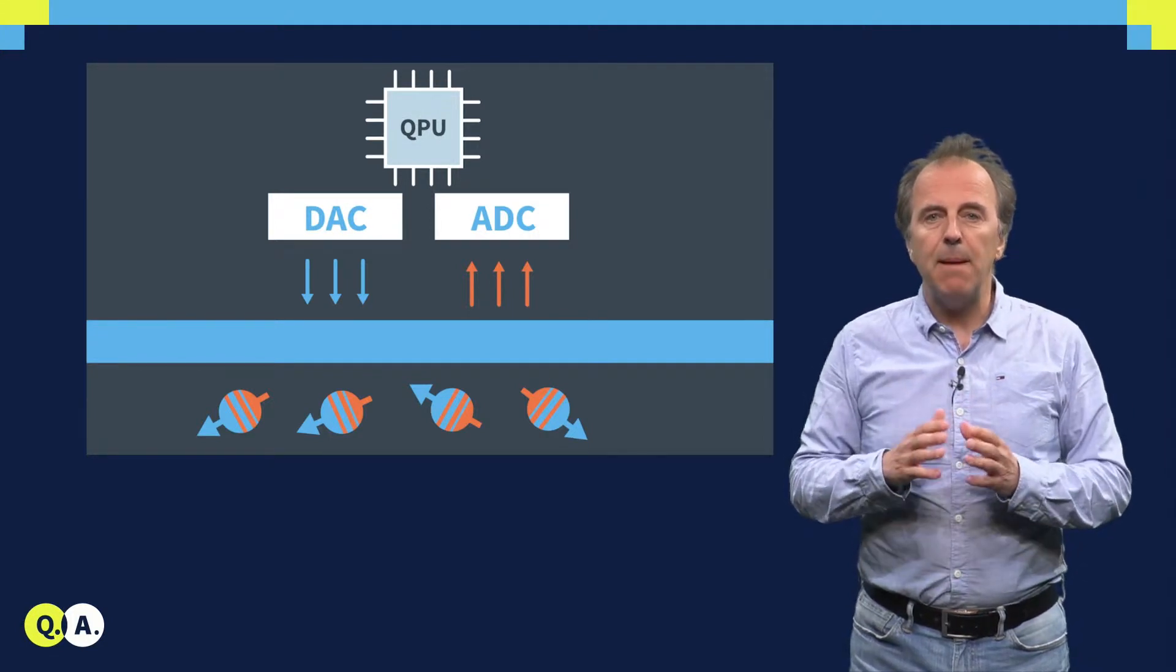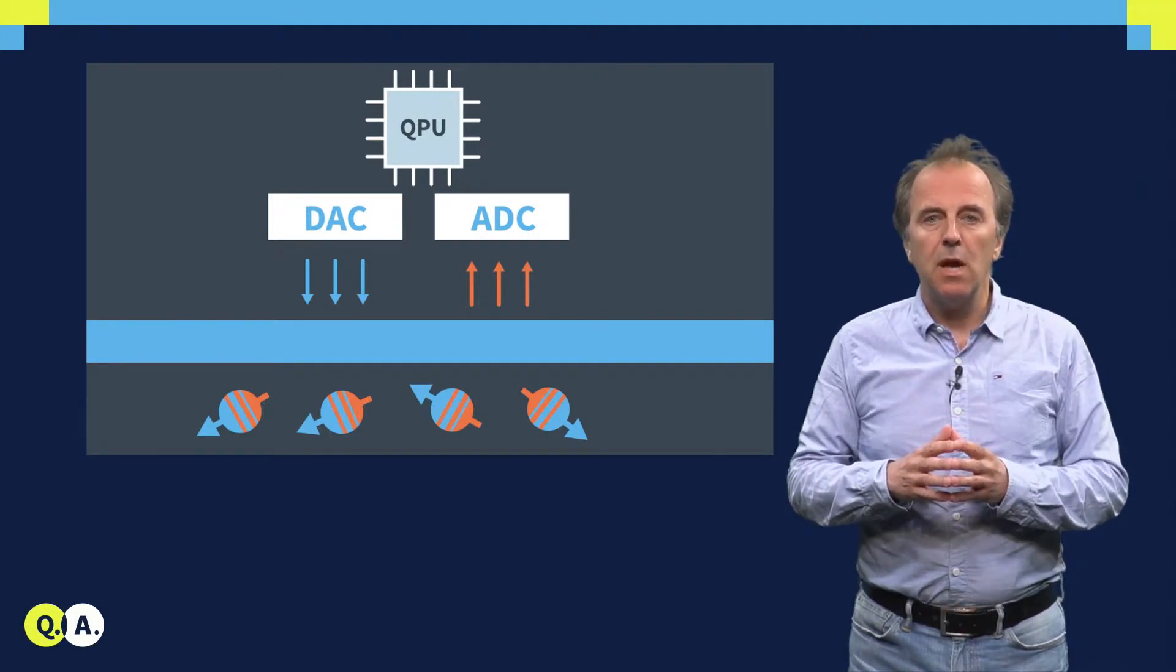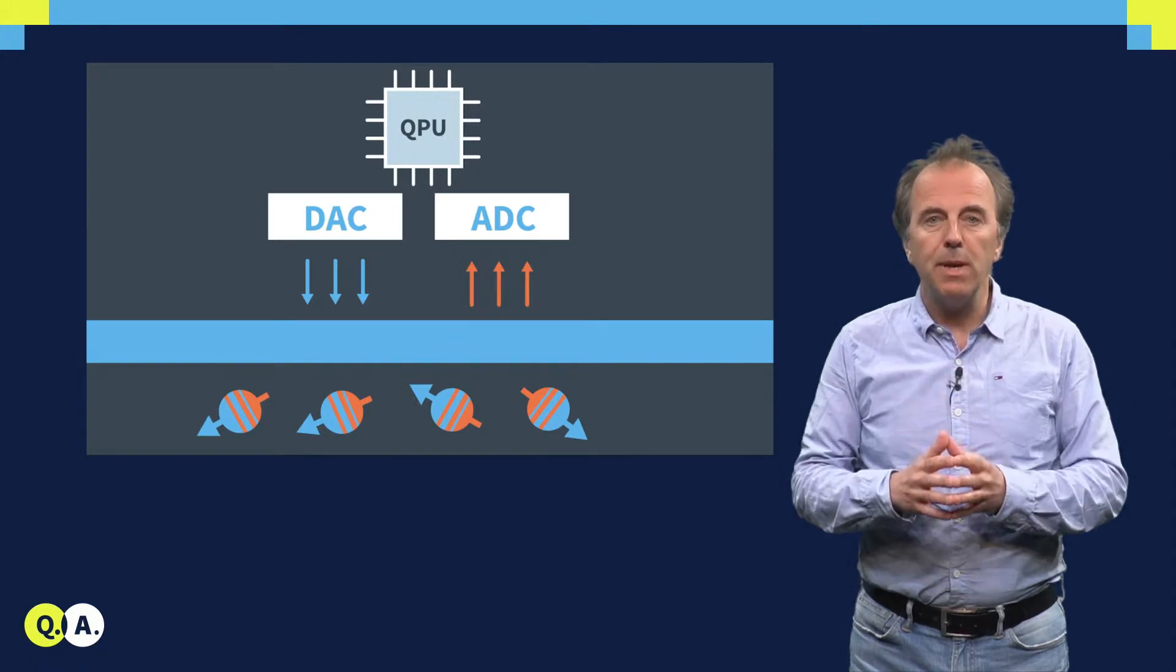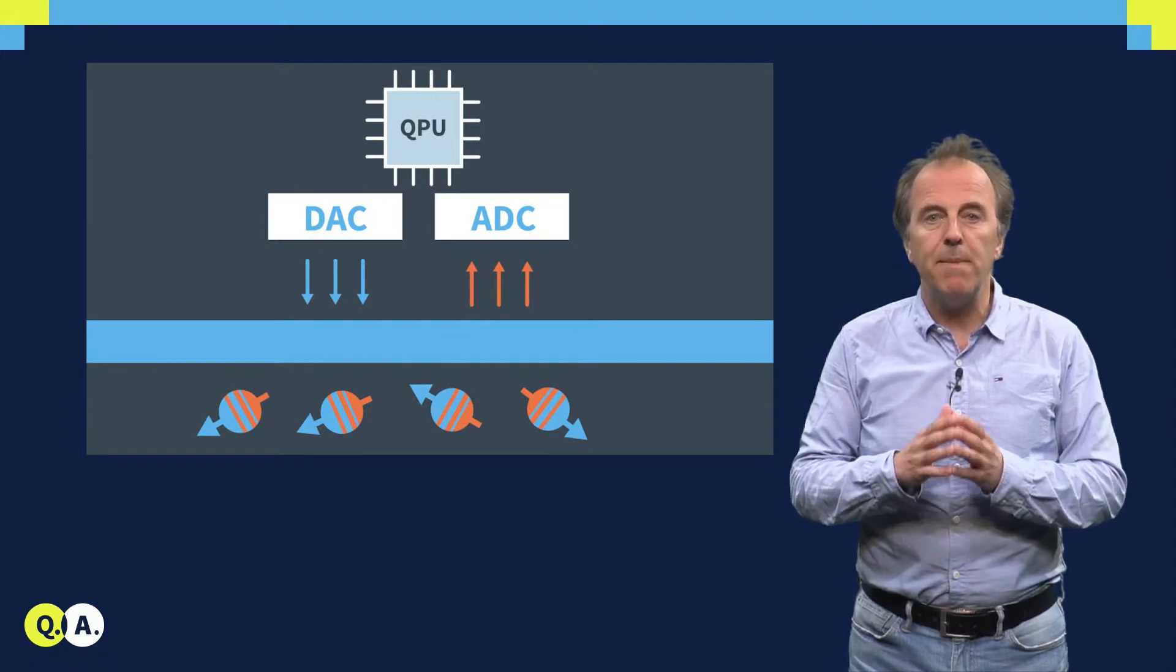As we explained before, the amplitude of the states of the qubit represents the probability with which a particular state of the qubit will be measured.